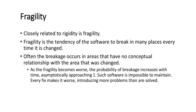The second thing, which is related to rigidity, is called fragility. Fragility is the tendency of a software to break in many places every time you change one thing. If you change one thing in your code, the effect of that change is seen as breakage or faulty errors appearing in another piece of code. This happens when you have lots of code and you do not know the dependencies of each module. Often the breakage occurs in areas that have no conceptual relation with the area that was changed.